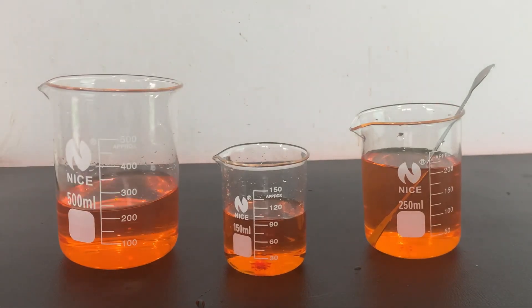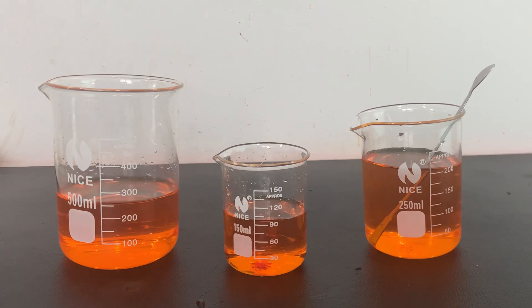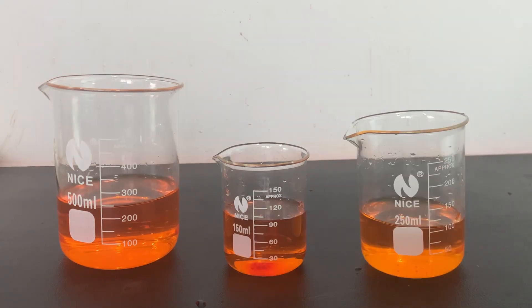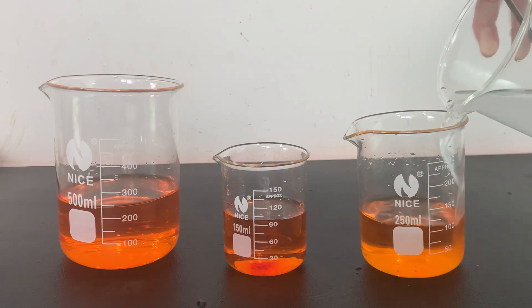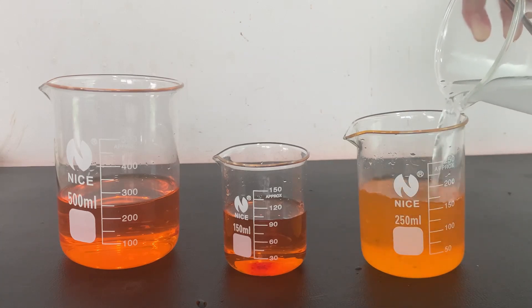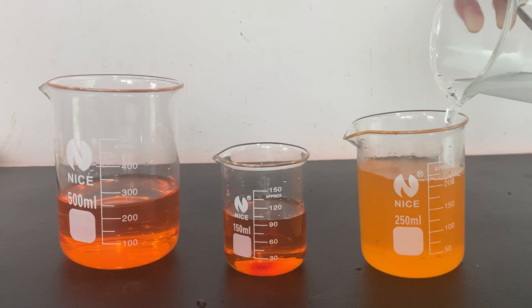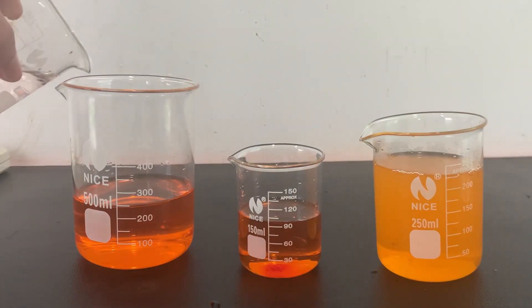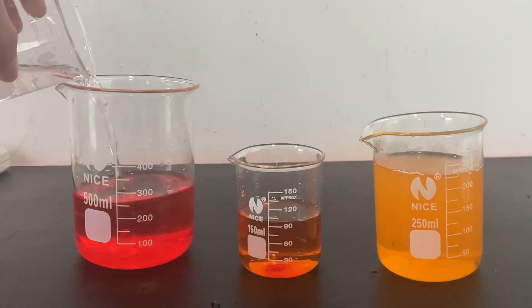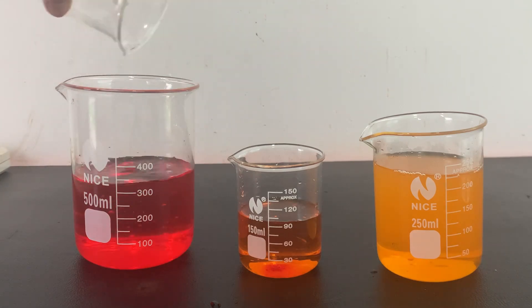To test the methyl orange as a pH indicator, I made solutions of it in three different beakers. To the right beaker, I added a sodium hydroxide solution which caused the color to turn yellow. To the left beaker, I added hydrochloric acid which caused the color of the solution to turn red.